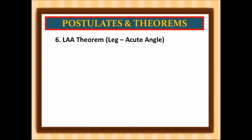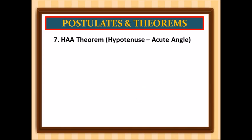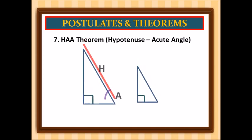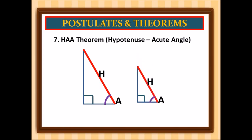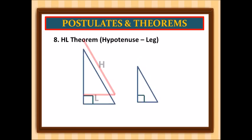For the leg-acute-angle theorem, we can use this only if the leg and acute angle of the first triangle are similar to the leg and acute angle of the second triangle. For the hypotenuse-acute-angle theorem, we can use this only if the hypotenuse and acute angle of the first triangle are similar to the hypotenuse and acute angle of the second triangle. For the hypotenuse-leg theorem, we can use this only if the hypotenuse and leg of the right triangle are similar to the hypotenuse and leg of the second triangle.